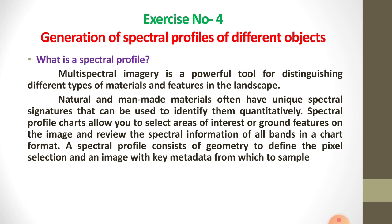For example, materials and features like buildings, trees, and animals are distinguished in the spectral profile. Both natural and manmade materials — natural materials like trees, animals, birds, and manmade materials like buildings, roads, etc. — these materials often have unique spectral signatures that can be used to identify them quantitatively.